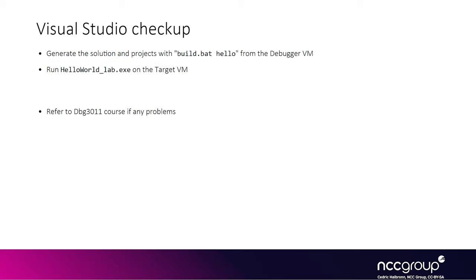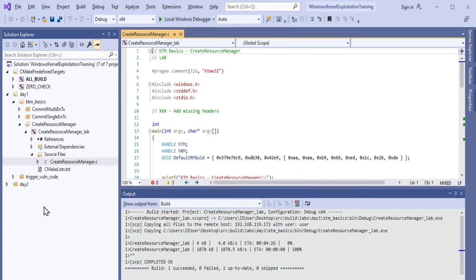To check Visual Studio and SSH work properly to push the compiled binary from the debugger VM onto the target VM, you can run the build.bat hello command or build it directly from the Visual Studio project. Then you should be able to run the hello world executable from the target VM. You can see the different labs on the left, and when you compile a given project, you should see in the output window that it copies the file over SSH onto the target VM.